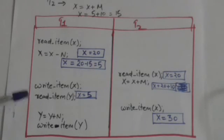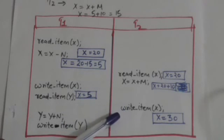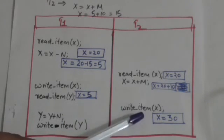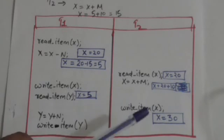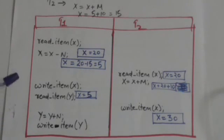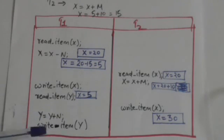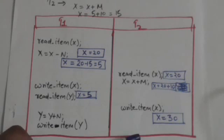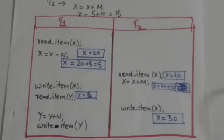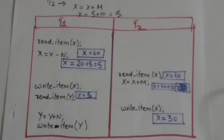T1 writes x = 5 to the database, then reads y. After this, T2 writes its value of x = 30 to the database, overwriting T1's result. T1 then adds n to y and writes the new value of y. The final value of x stored in the database is 30, which is wrong — it should be 15. In serial schedules, no interleaving occurs, so such problems do not arise.